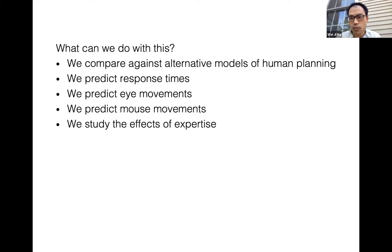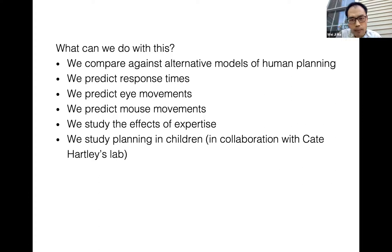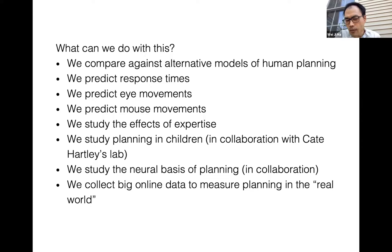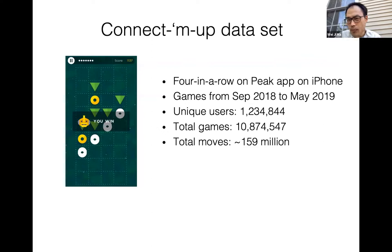In collaboration with a developmental lab, we are studying planning in children — what gets better between eight-year-olds and 24-year-olds as they play this game. We have other collaborations studying the neural basis of planning: how value and decision tree search are represented in the brain. We also work with a company called Peak, which has an iPhone app where they programmed our game.